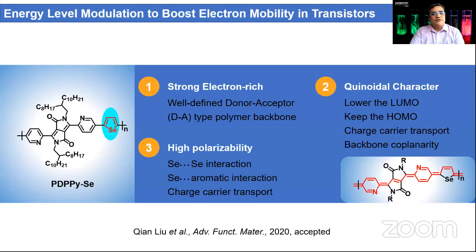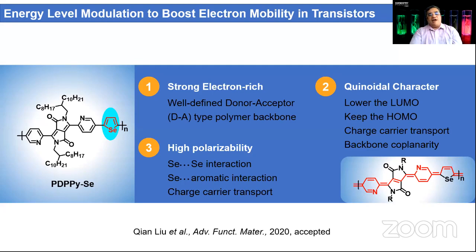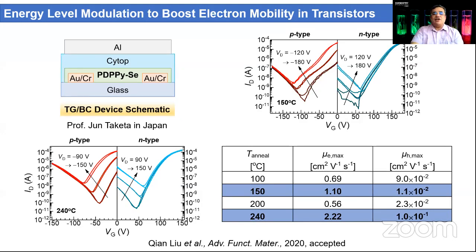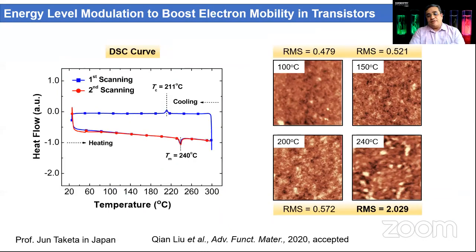Recently we published another polymer — pyridine-based DPP with selenophene as a comonomer. Pyridine is a very electron-rich N-type material, and taking selenophene as the donor we made this polymer. Using this donor-acceptor polymer in collaboration with Japan, we achieved electron mobility of 2.22 cm² per volt-second, published in Advanced Functional Materials. It also shows hole mobility — it is basically an ambipolar material — but electron mobility is much more pronounced because of the pyridine flanking group in the backbone, making the system more electron-transportable due to the LUMO value.